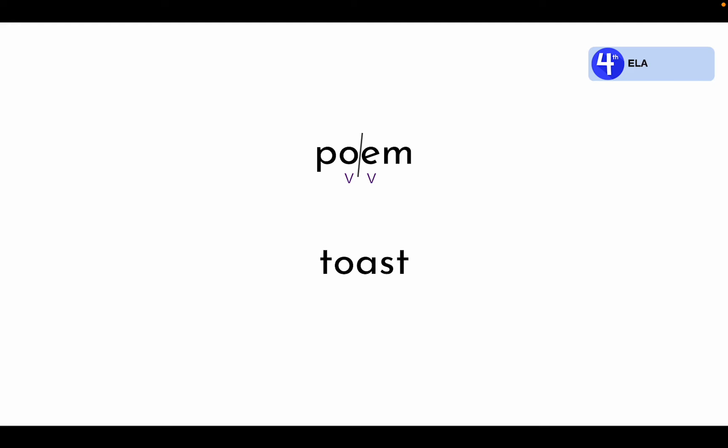Now let's look at the word toast. It also has two vowels, o and a. The word toast is a one-syllable word. Therefore, we won't be breaking it into any other syllables. The letters o and a are working together to make one sound: o.